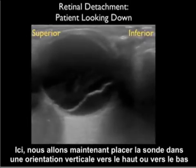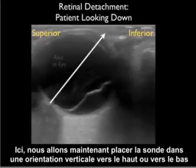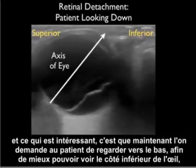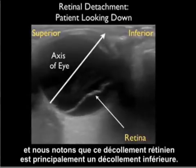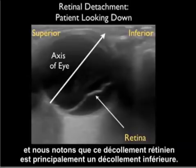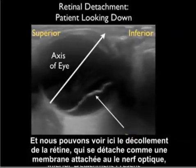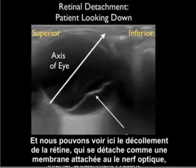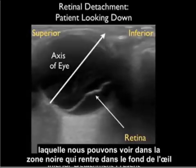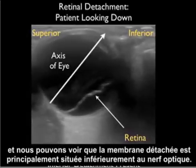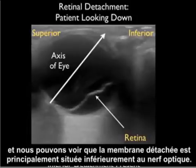We're now placing the probe in a vertical up-and-down orientation, with the patient looking down so we can best see the inferior aspect of the eye. This retinal detachment is mainly an inferior detachment. We can see the detached retina coming off as a membrane that tethers at the optic nerve — visible as that black area at the back of the eye — with the detached membrane predominantly located inferior to the optic nerve.